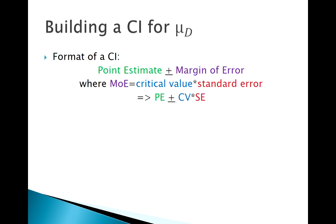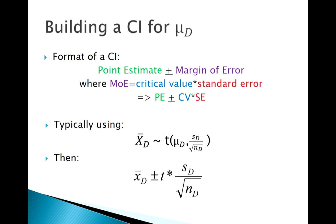Typically we're going to use the t. So just like we've constructed before, our point estimate of mu d is x-bar d, t distribution, so t critical value, and we're using our standard error here.